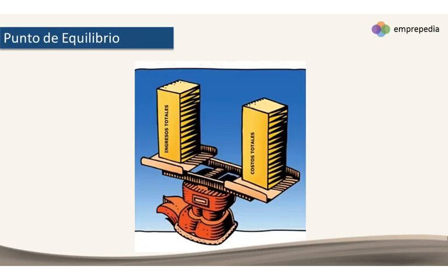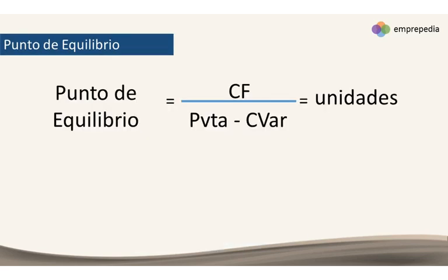Recordemos qué es el punto de equilibrio: es cuando quedamos tablas, no ganamos, no perdemos. Hay una fórmula que me ayuda a determinar la cantidad de unidades que necesito vender para que ocurra eso, para que tenga utilidad cero. La fórmula es: costo fijo entre precio de venta menos costo variable.